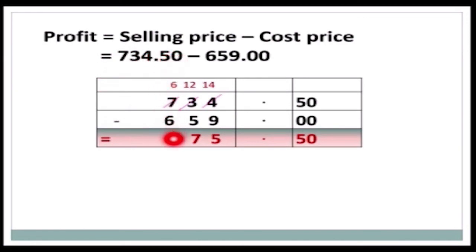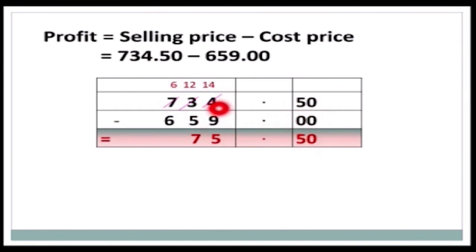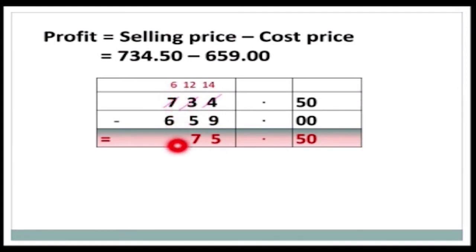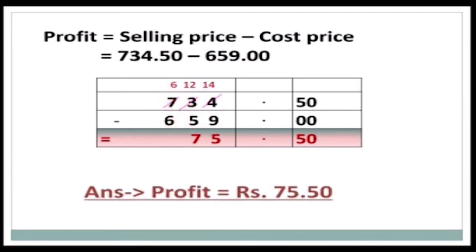We subtract 659 from 734.50. Starting from the right: 0 minus 0 is 0, 5 minus 0 is 5. We cannot subtract 9 from 4, so we borrow — 14 minus 9 is 5. After returning the borrow, we cannot subtract 5 from 2, so we borrow again — 12 minus 5 is 7. After returning the borrow, 6 minus 6 is 0. Therefore, the profit is rupees 75.50.